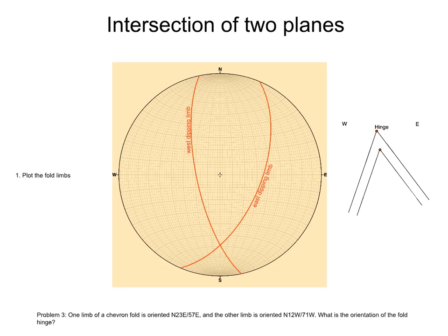The first we need to do is to plot the two limbs on the stereonet. These are the two great circles in the figure. Notice that the west dipping limb is steeper and therefore is closer to the center of the stereonet.